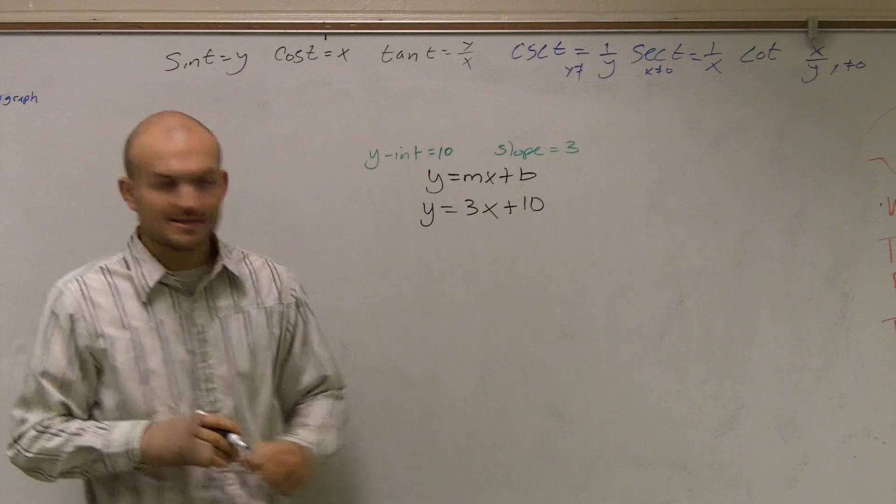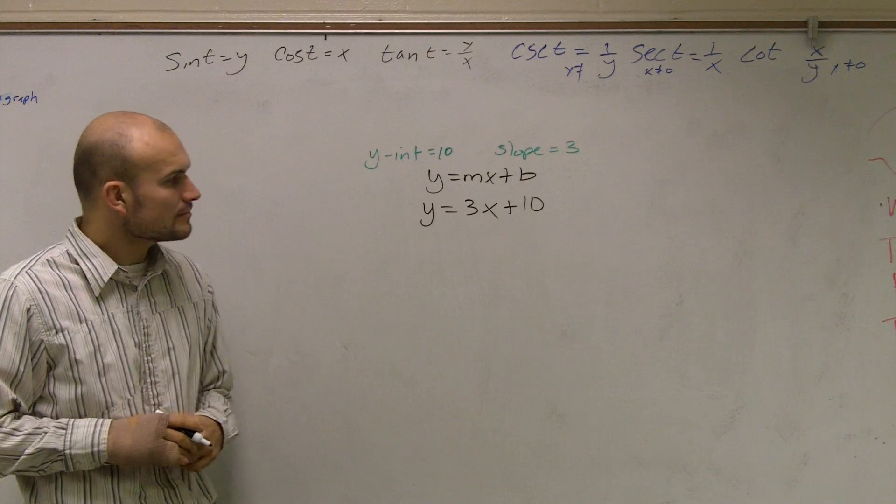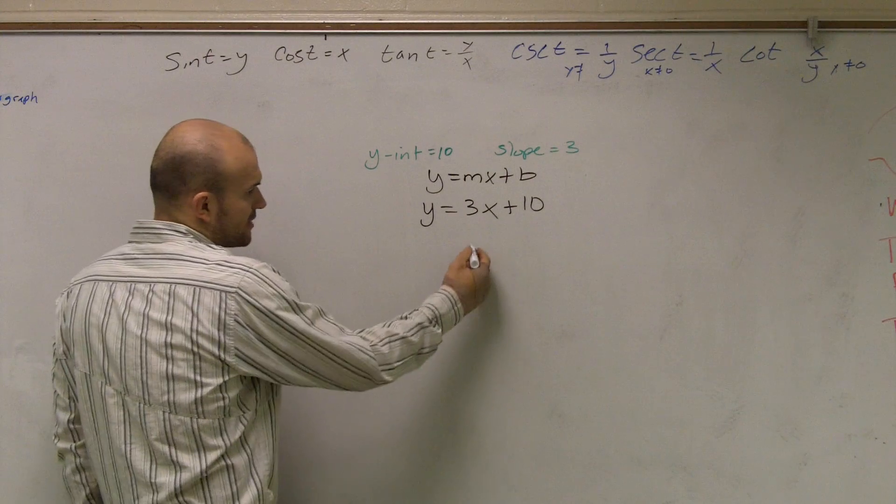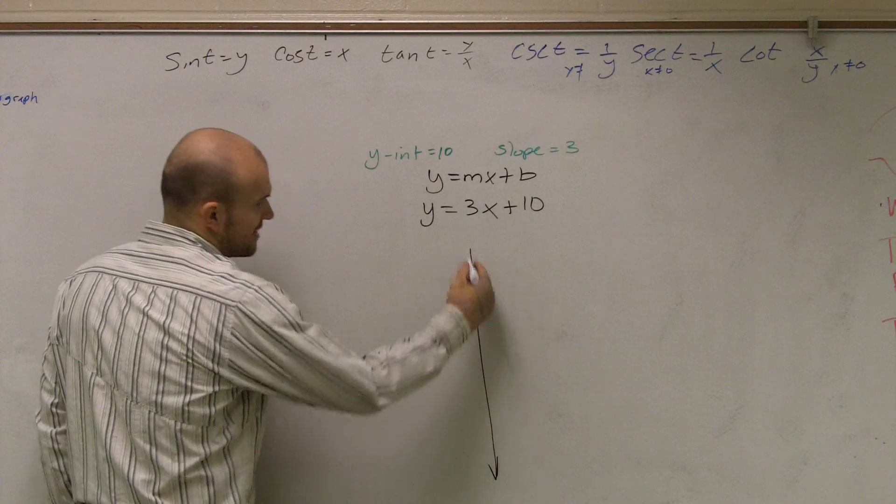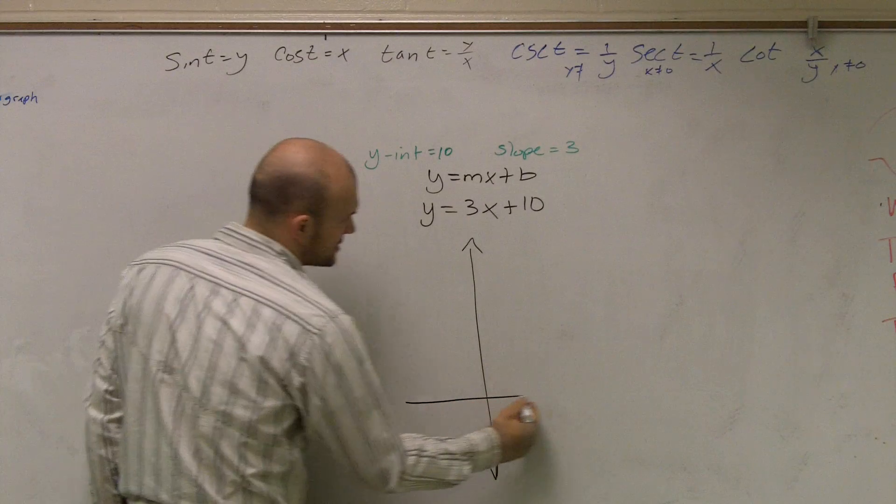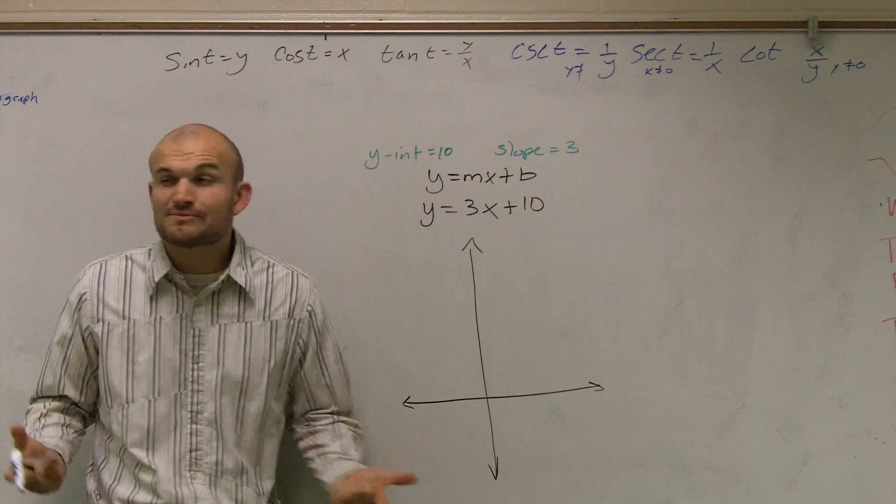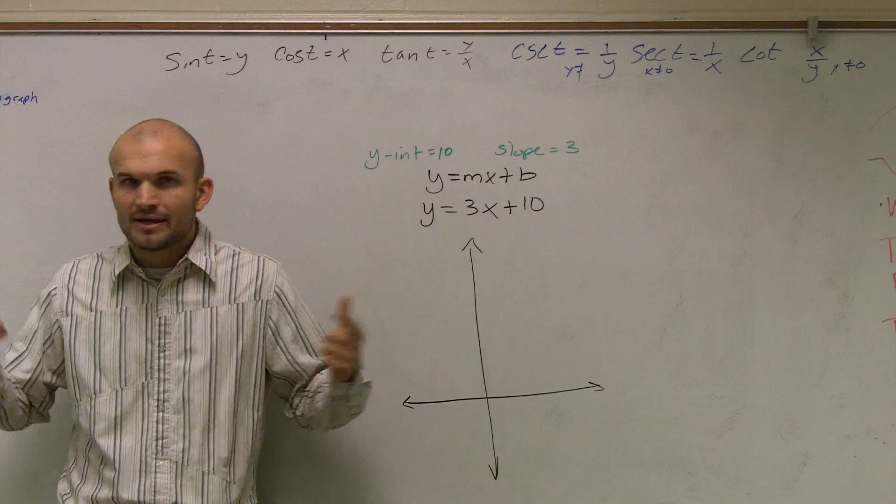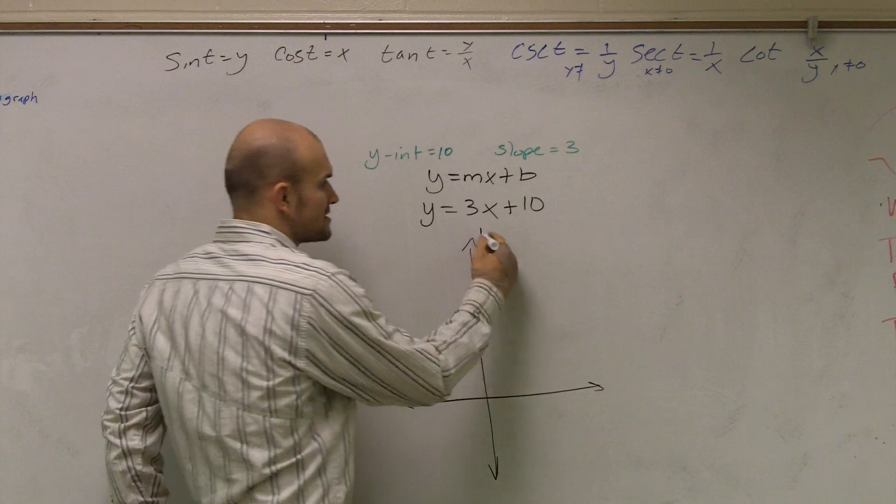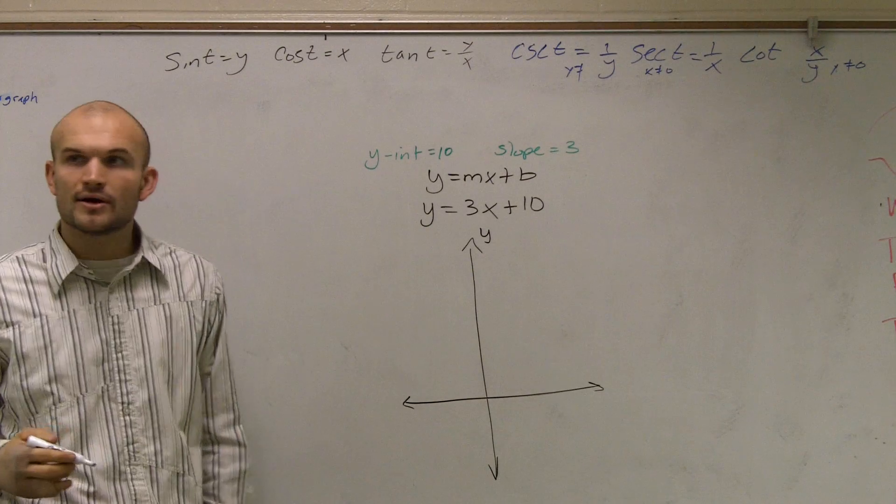Now, the next thing I want to do is I need to graph this. Now guys, when we were given a graph, you guys did a very good job, or you still do a very good job, of finding the y-intercepts. Because the y-intercepts are pretty easy to find when you're thinking about it. It's just where does the graph cross this y-axis, right?